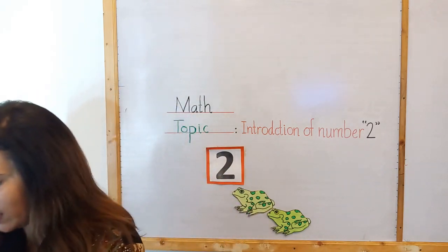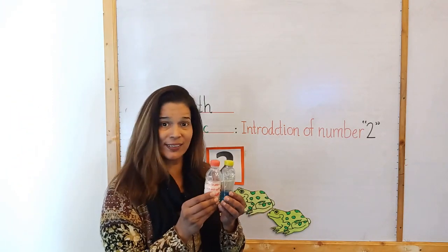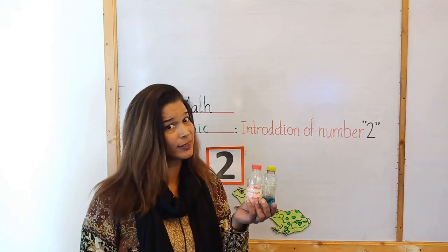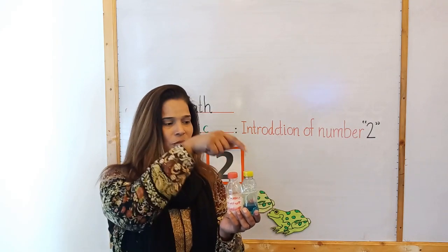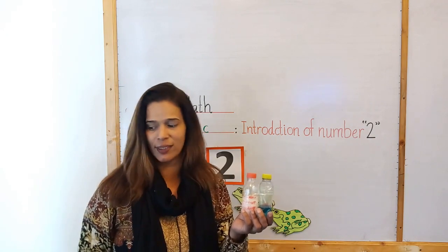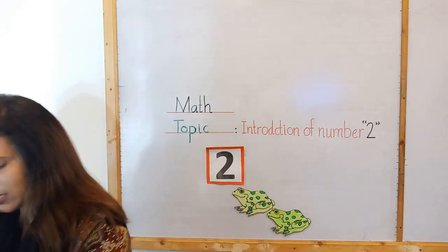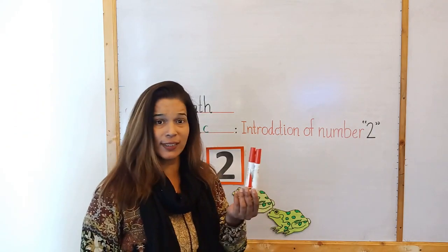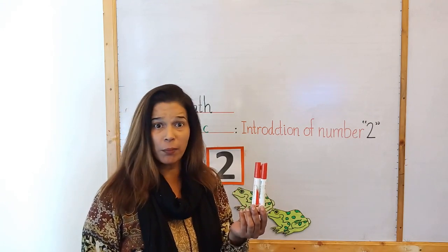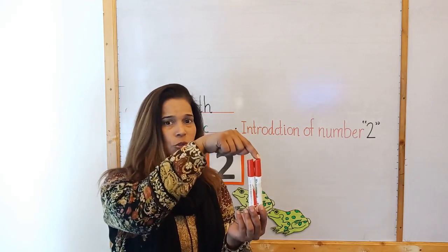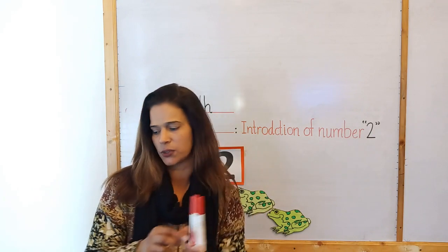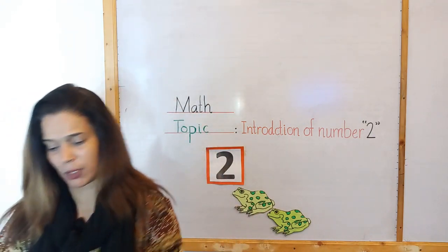Now tell me, what is this? These are bottles. How many bottles? Let's count: one, two. Two bottles. Very good! Now tell me, what are these? These are markers. How many markers? Let's count: one, two. Two markers. Very good!